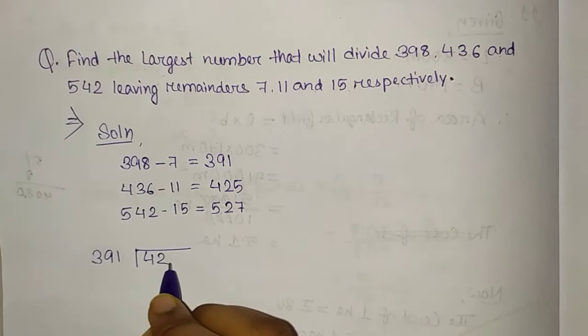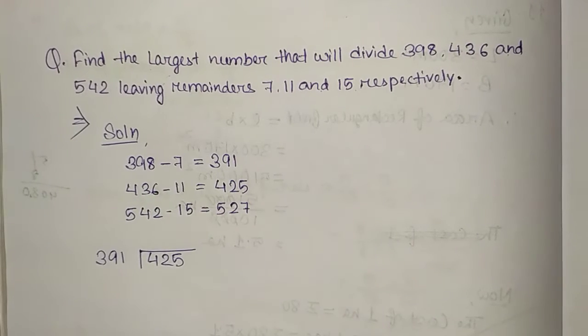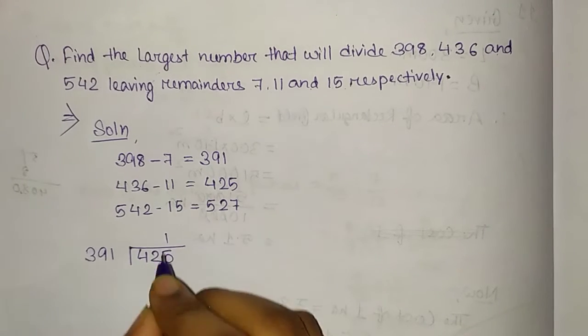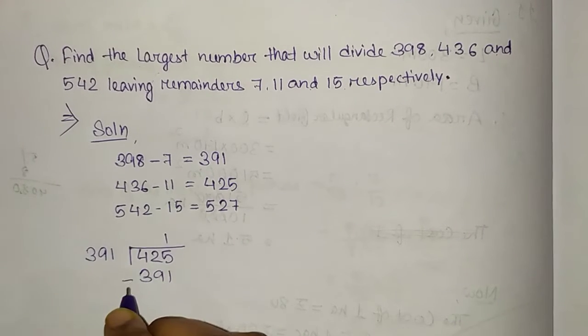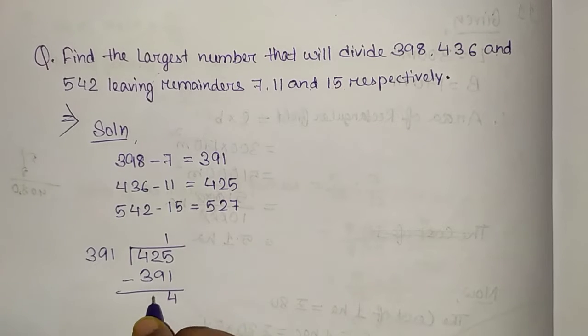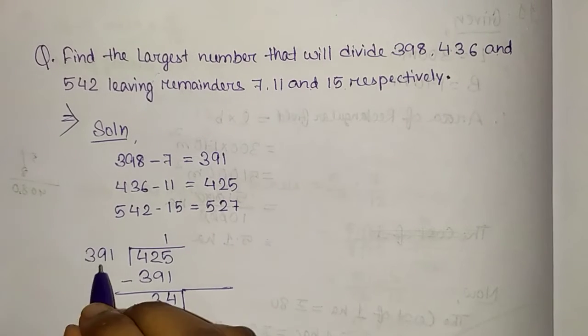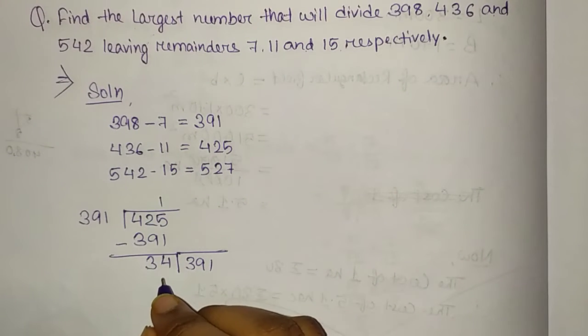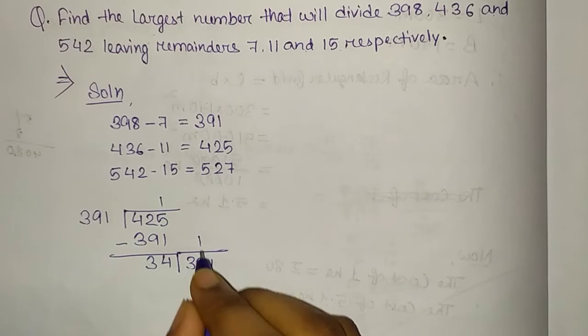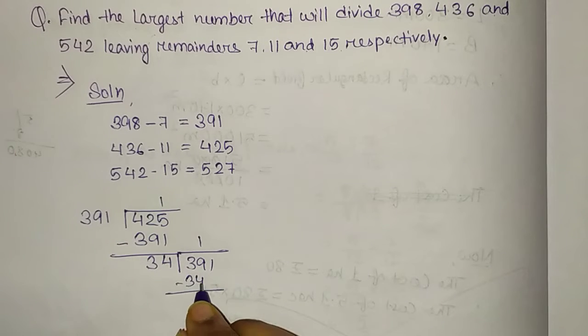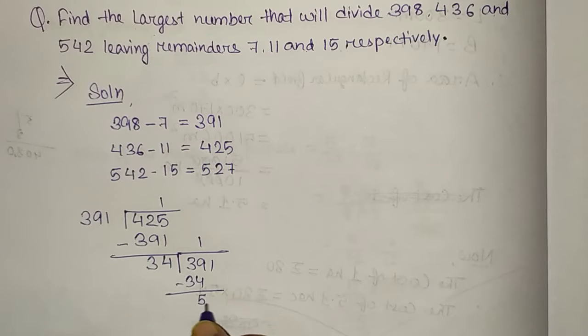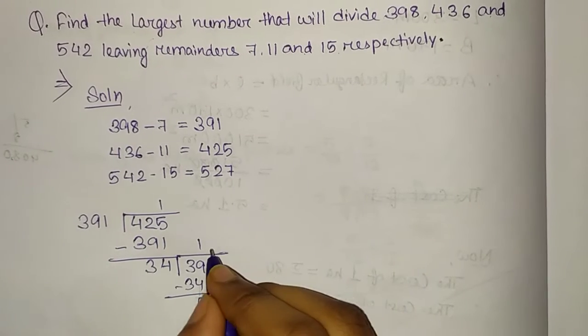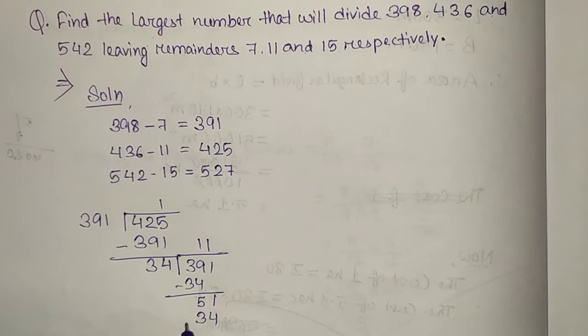391 divided by 425. So, first of all, we will get quotient 1, then 391 minus 391 gives 34. Now, again we will get quotient 1, then 34 times 1, then 34 minus 34 gives 51. Again, we will get quotient 1, so 34 minus 34, then it becomes 17.